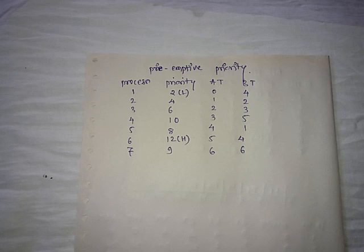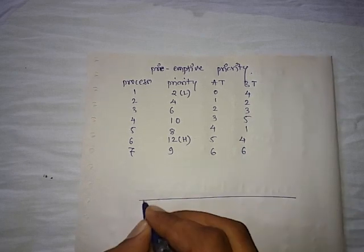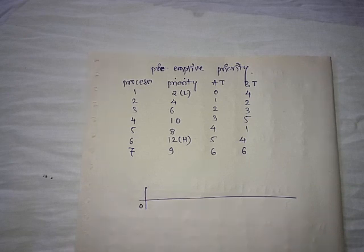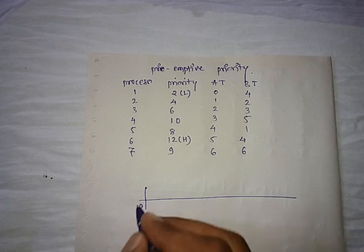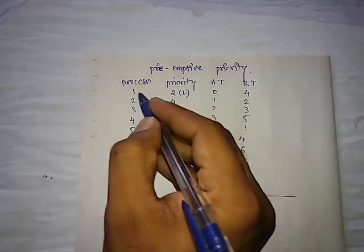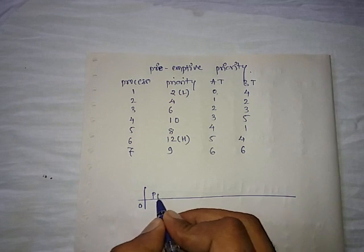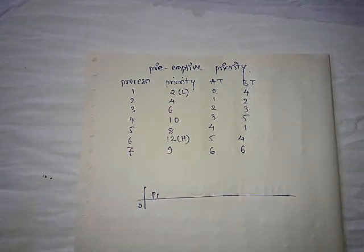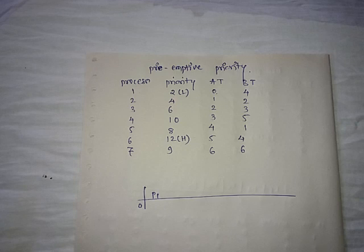The first step is to draw a Gantt chart, starting from 0. Check if there is any process coming at time 0 — yes, there is P1. We don't have any other choice, so we have to schedule P1, though its priority is the lowest of all other processes. We have scheduled P1 here, but the question is for how much time we are going to run this P1 process.